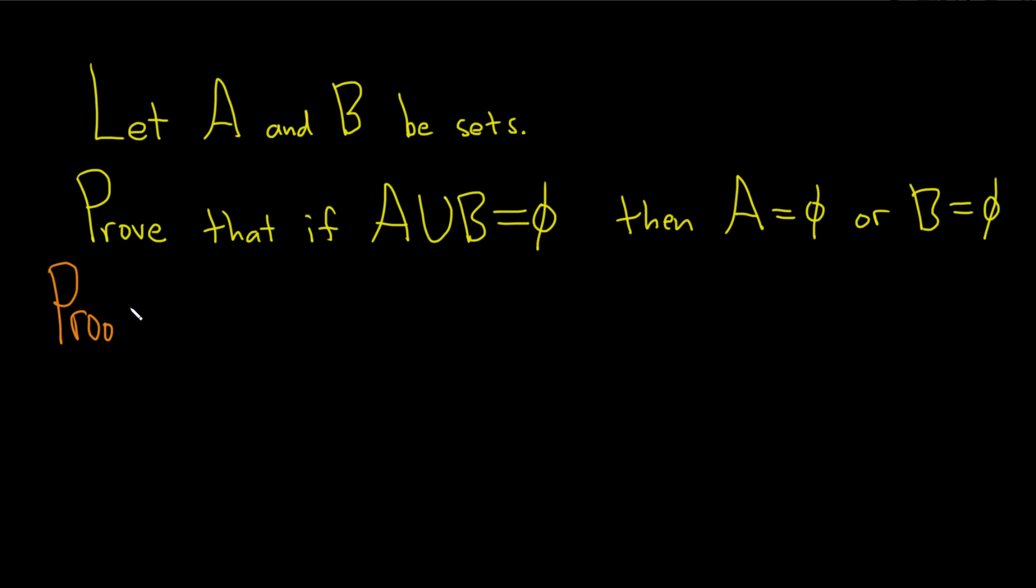So proof. Normally to prove something like this you assume that this is true and then you show that this is true. We're going to do what's called a proof by contrapositive. So we're going to assume that this is not true and then we're going to show that this is not true.